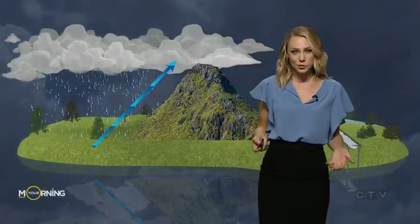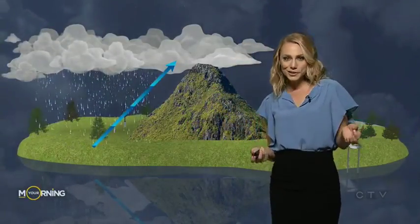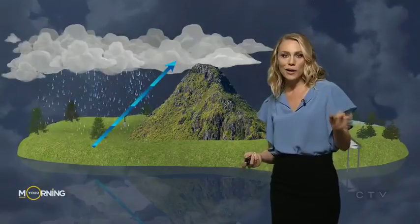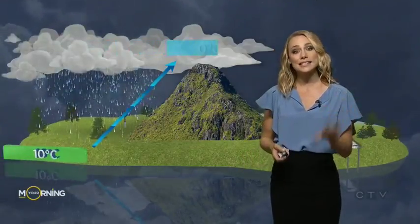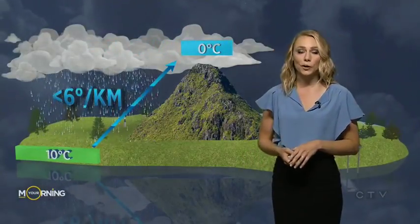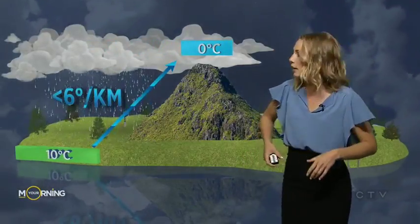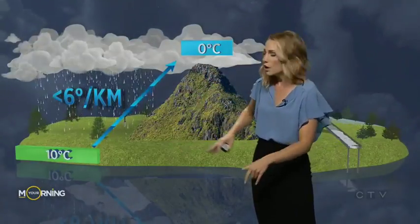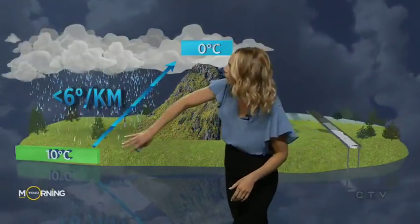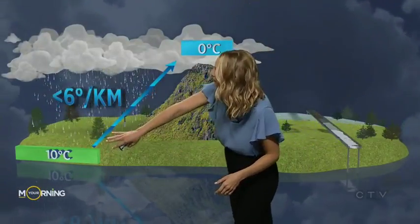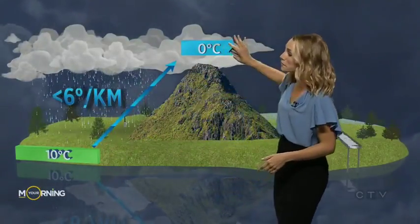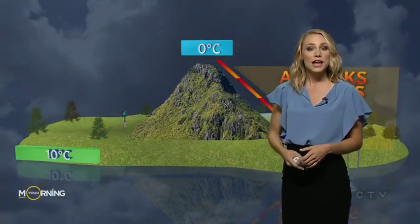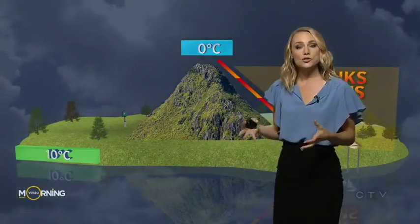Now how fast does this cool? It cools at what's called the moist adiabatic rate — less than six degrees per kilometer. If we have an elevation change of about 2,000 meters, we'll see temperature go from 10 degrees at the surface up to freezing towards the top of the range. Now the air is dry and it continues to truck its way eastward.